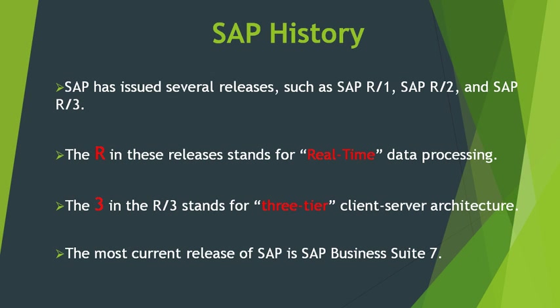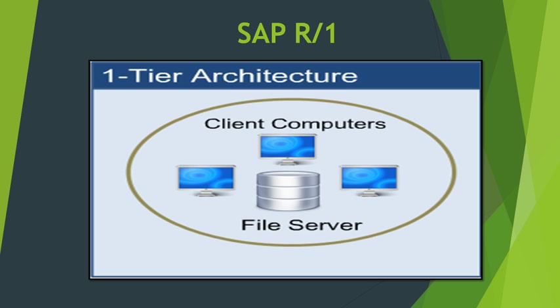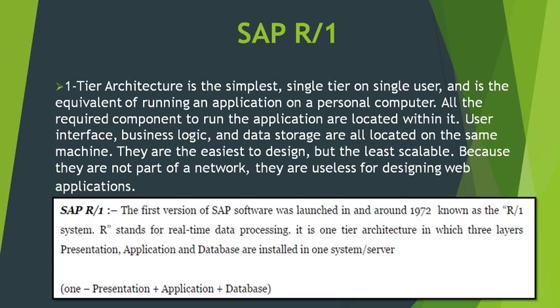SAP R1 was the first version of SAP's flagship enterprise software — a financial accounting system, known as real-time one-tier architecture. It was launched around 1972. It is a one-tier architecture in which all three layers — application layer, presentation layer, and database layer — are installed in one system. This is essentially a single-tier or single-user application.